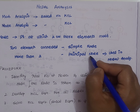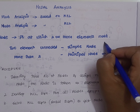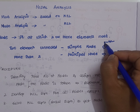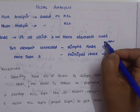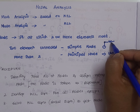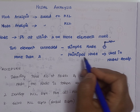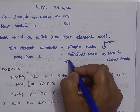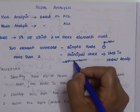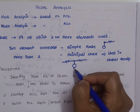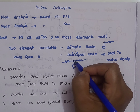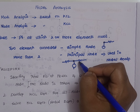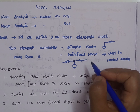The difference between a simple node and a principal node is that in a simple node we have just two elements meeting at a point. For a principal node, we have two or more branches meeting together — any source connection included. This principal node concept will be used in our nodal analysis.